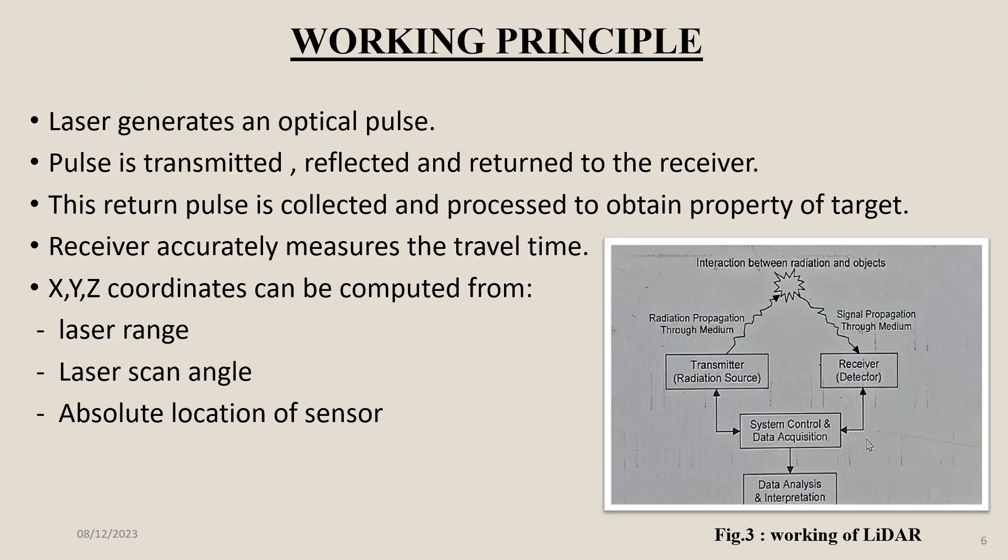The working principle of LIDAR: a laser generates an optical pulse that is transmitted, reflected, and returned to the receiver. The returned pulse is collected and processed to obtain properties of the target. The receiver accurately measures the travel time. XYZ coordinates are computed from laser range, laser scan angle, and the absolute location of the sensor. Figure 3 shows this process as a flowchart.